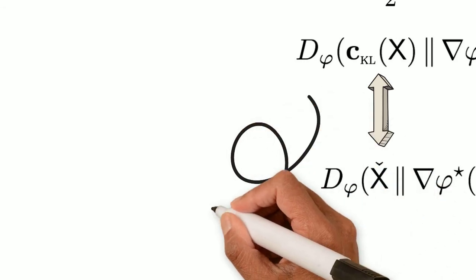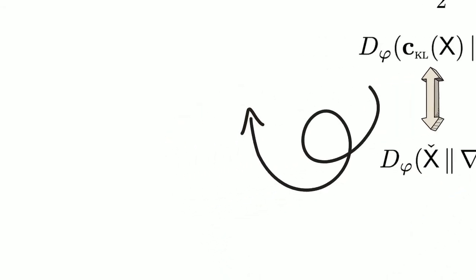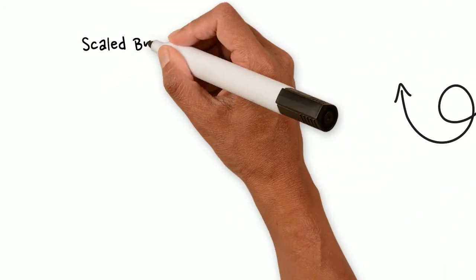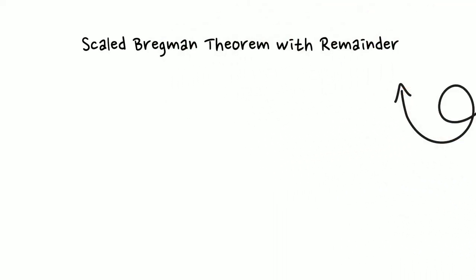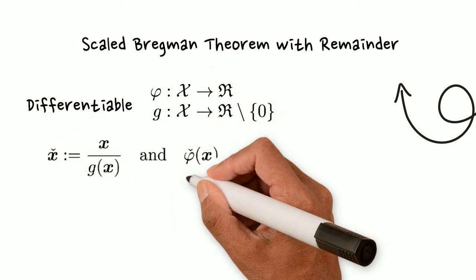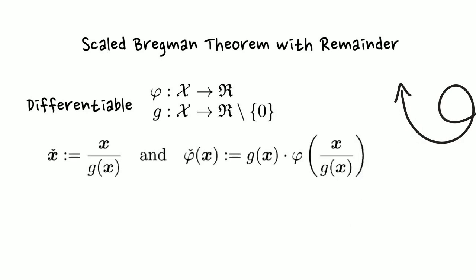The technical hammer we use to show the equivalence is an extension of a result from NIPS 2016. For differentiable generator phi and a normalization function g, also differentiable, we define the normalized version of the data vectors and the Bregman generator.